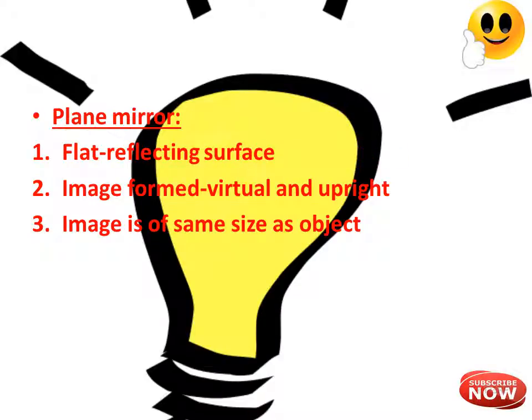In a plane mirror, the reflecting surface is flat and the image formed is virtual and upright. The image is the same size as the object.